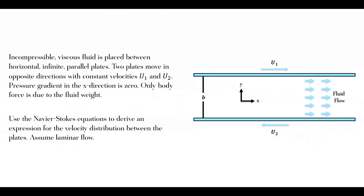Another Navier-Stokes equation problem for fluid mechanics. It's an incompressible viscous fluid between two parallel infinite horizontal plates. They move in opposite directions. In the previous example, U1 was moving in the same direction, but now U2 is moving backwards. The second plate was fixed before, but in this case it's moving, so the velocity profile is going to change. The pressure gradient in the x direction is zero, and the only body force is due to the fluid weight.